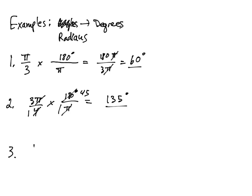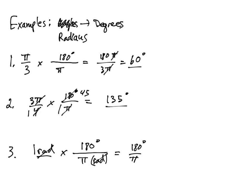Lastly, 1 radian. This angle measurement doesn't have π in it, but the label 'rad' tells us it's in radians. Going into degrees, put 180° in the numerator and π radians in the denominator. The radian unit cancels, leaving 180/π. Using a calculator, 180 divided by π gives about 57.3 degrees.